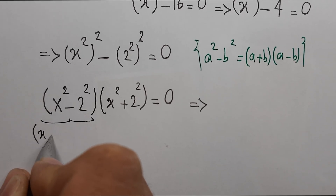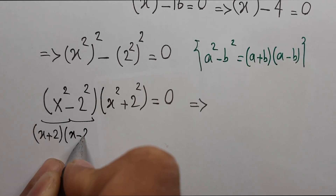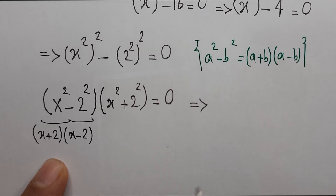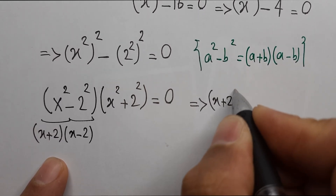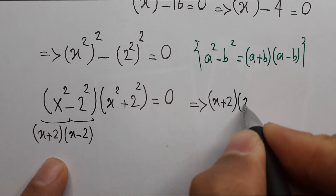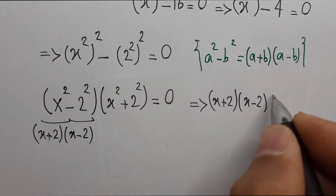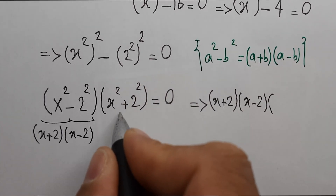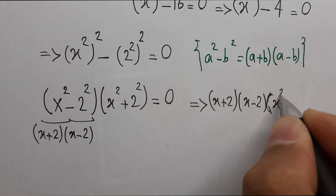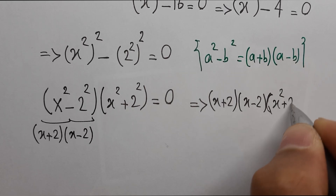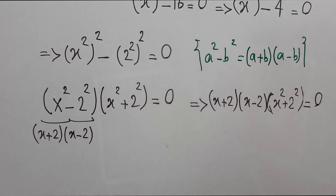We can apply the difference of squares again to get (x + 2)(x - 2) times (x² + 2²) equals 0.